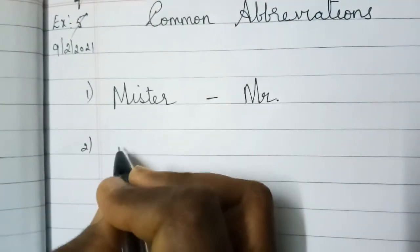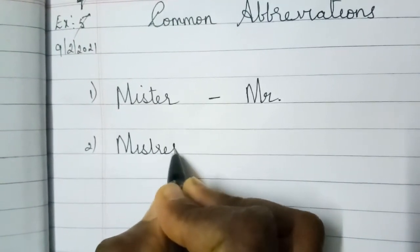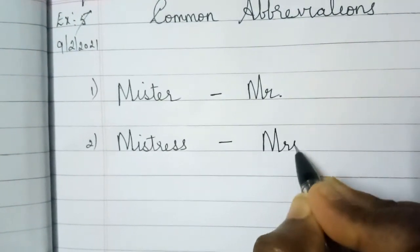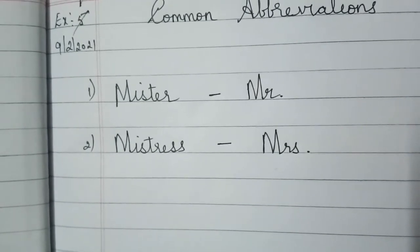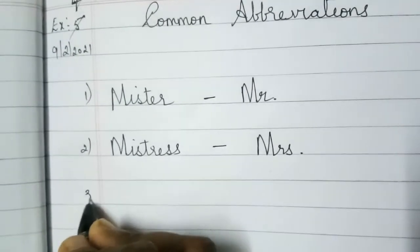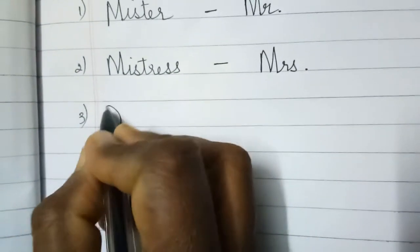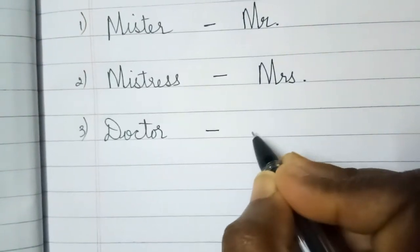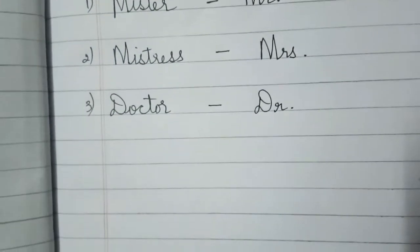Second one, Mistress, M-I-S-T-R-E-S-S. So they write M-R-S and dot. Don't forget to put the dots. Third one, these are the common which we use in our daily activities. Doctor. We write D-R and put a dot.